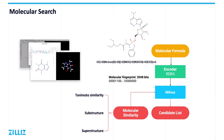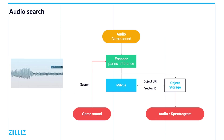With this system, we can analyze over 800 million molecules in about 500 milliseconds on a single server. Next is the audio retrieval system. Audio retrieval is similar to image retrieval, but here the PANNs inference model is used to generate the feature vectors and retrieve the most similar sounds in Milvus.